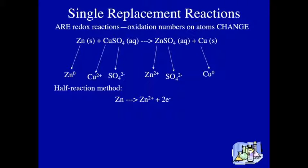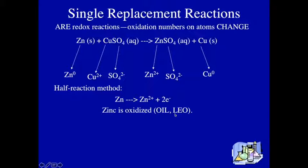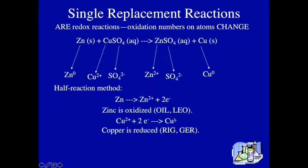In this first situation, zinc with a zero charge becomes the zinc two ion, and it lost two electrons to get there. So we say that zinc is oxidized. This is the OIL in your OIL RIG — oxidation is loss. This is the LEO in 'loss of electrons is oxidation.' The other component: if one atom is losing electrons, another has to gain them. Copper two gains two electrons to become elemental copper with a zero charge — we say that copper is reduced. When the positive charge goes down, copper is reduced. When the positive charge goes up, zinc is oxidized.